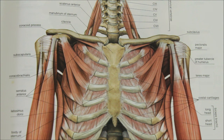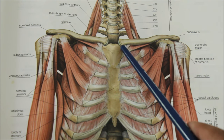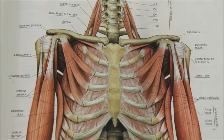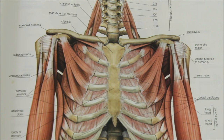It is the first bone to start ossifying. Ossification refers to bone formation, which means the clavicle is the first bone to be formed in the body. The clavicle is the only long bone which has two primary centers of ossification. There is no presence of a medullary cavity, and it is occasionally pierced by the middle supraclavicular nerve.